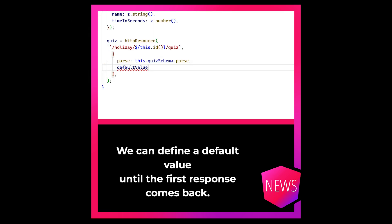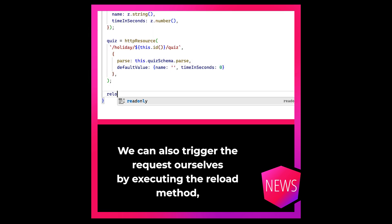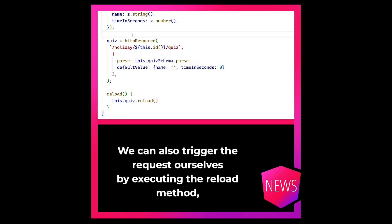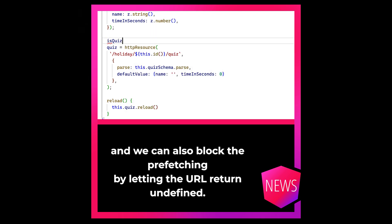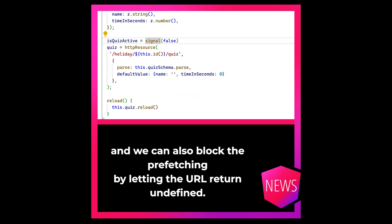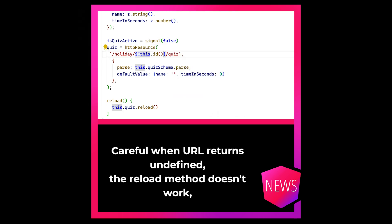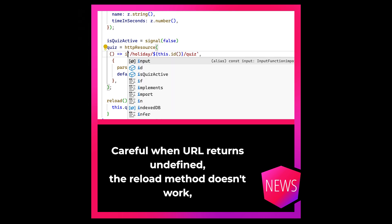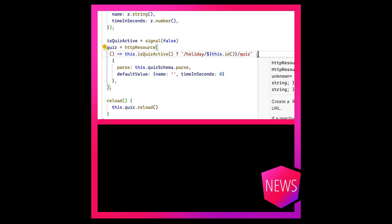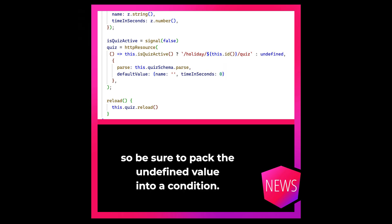We can define a default value until the first response comes back. We can also trigger the request ourselves by executing the reload method. And we can block the prefetching by letting the URL return undefined. Be careful — when the URL returns undefined, the reload method doesn't work, so be sure to wrap the undefined value into a condition.